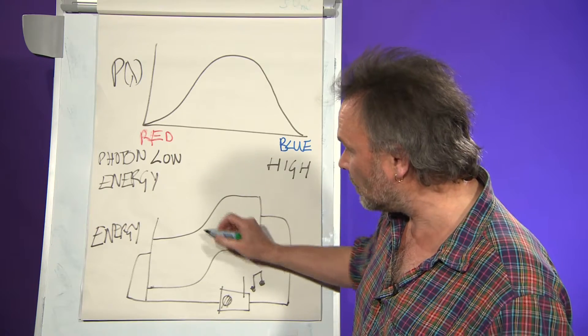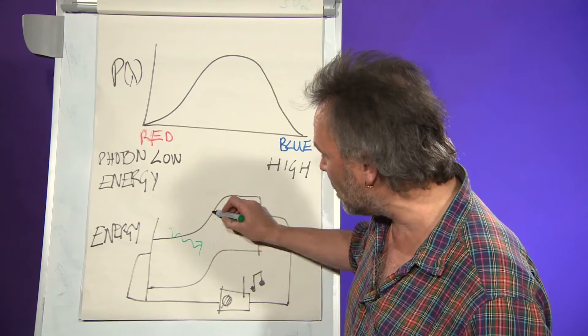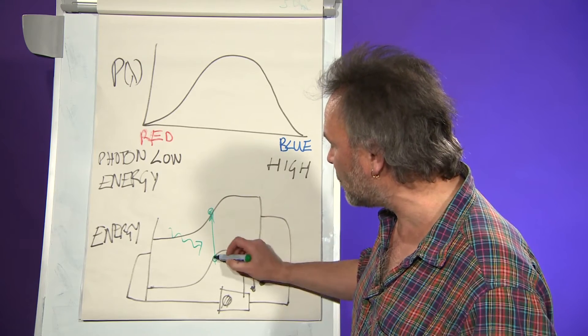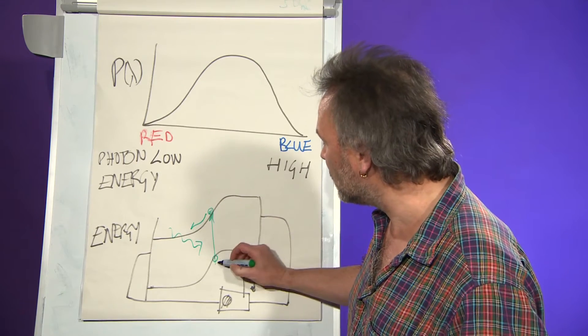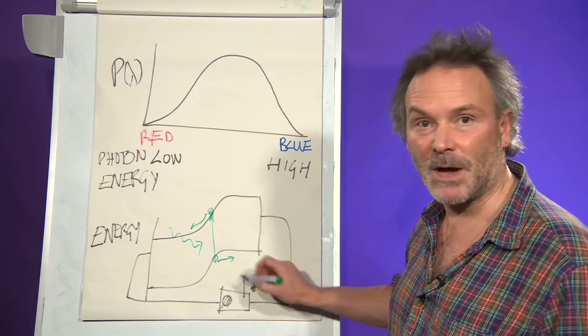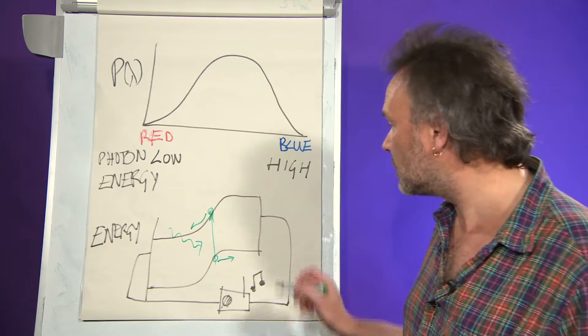It works by your photon coming along, say it's a green photon, and it kicks an electron off from one of these levels to the other and the electron scoots off down the cell and goes around that circuit and powers your load, whatever it might be, maybe it's a solar powered radio like this one.